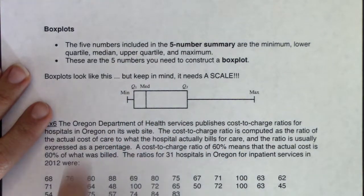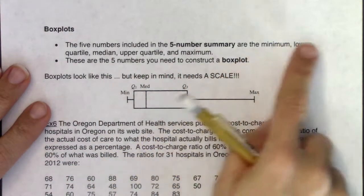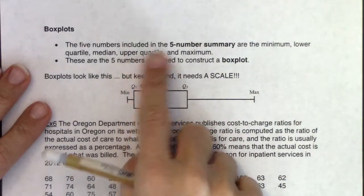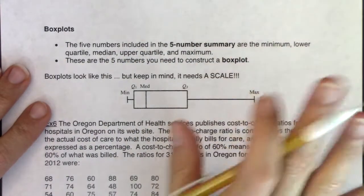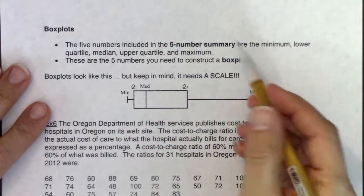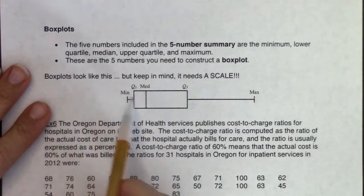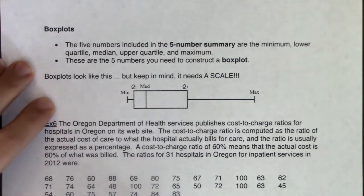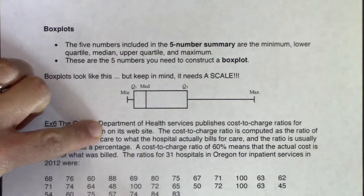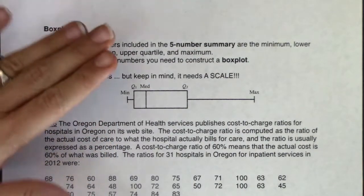You need min, Q1, median, Q3, and max to construct a box plot. All of those can be found from one-variable stats — as soon as you do data entry and run 1-Var Stats on L1, you have everything you need. Box plots look like this. Keep in mind they need a scale on the x-axis, but there is no frequency or relative frequency on the y-axis.